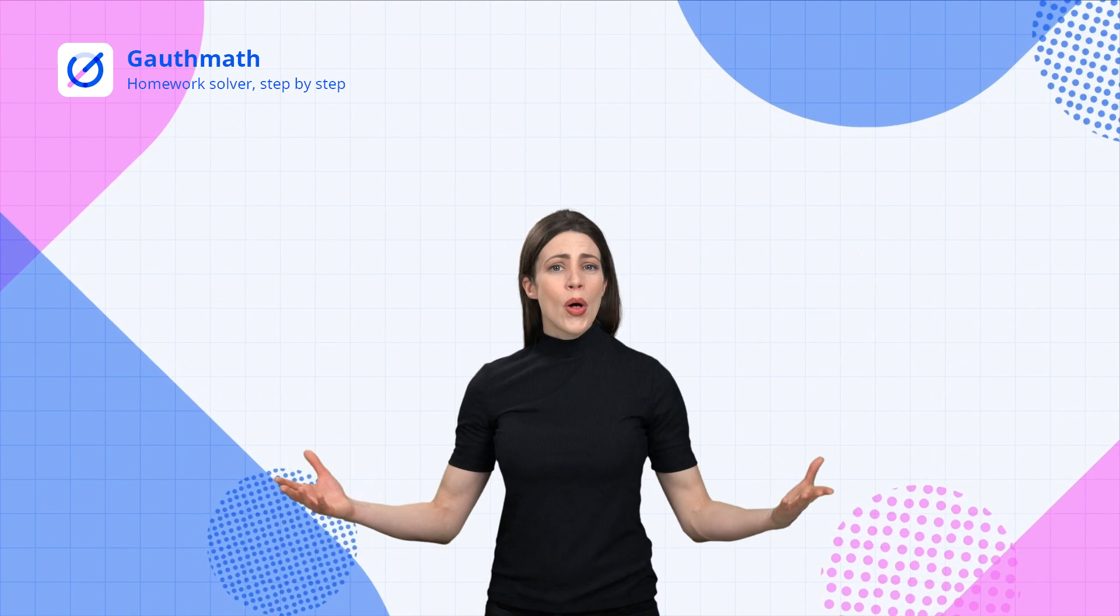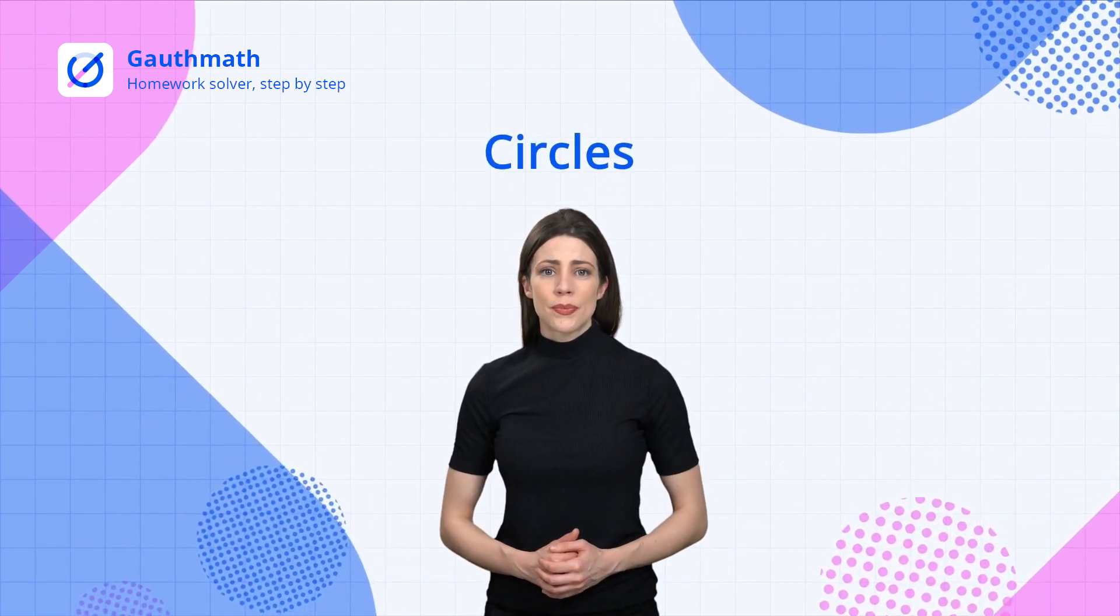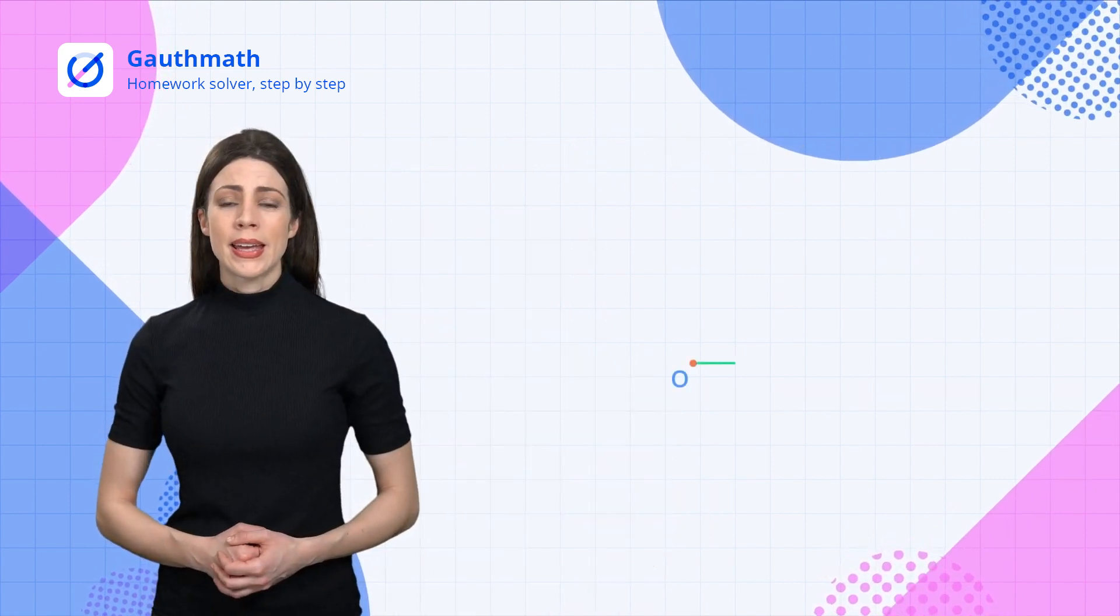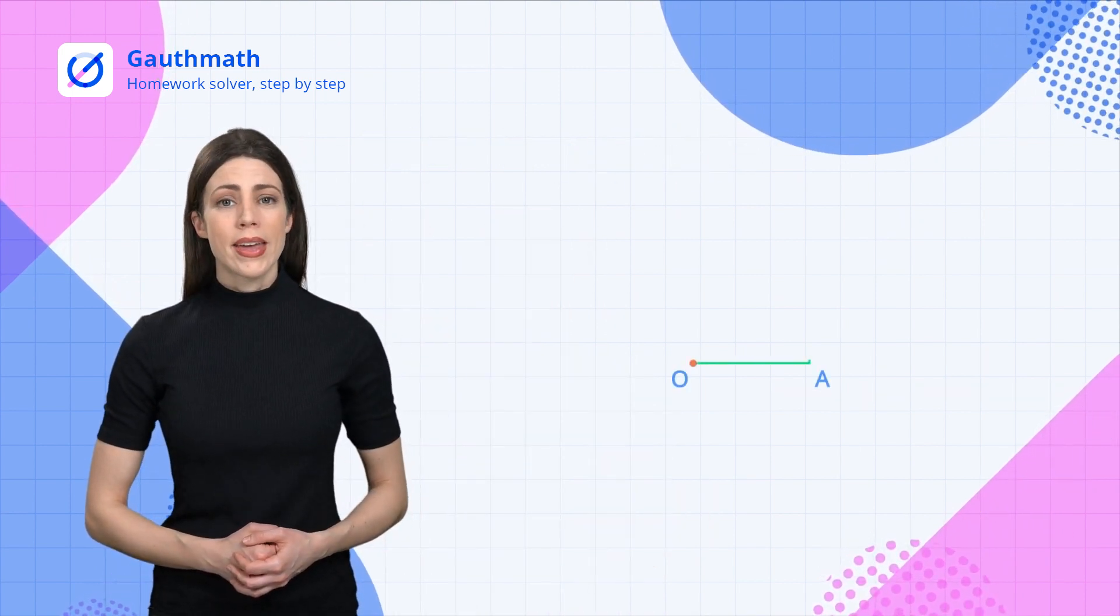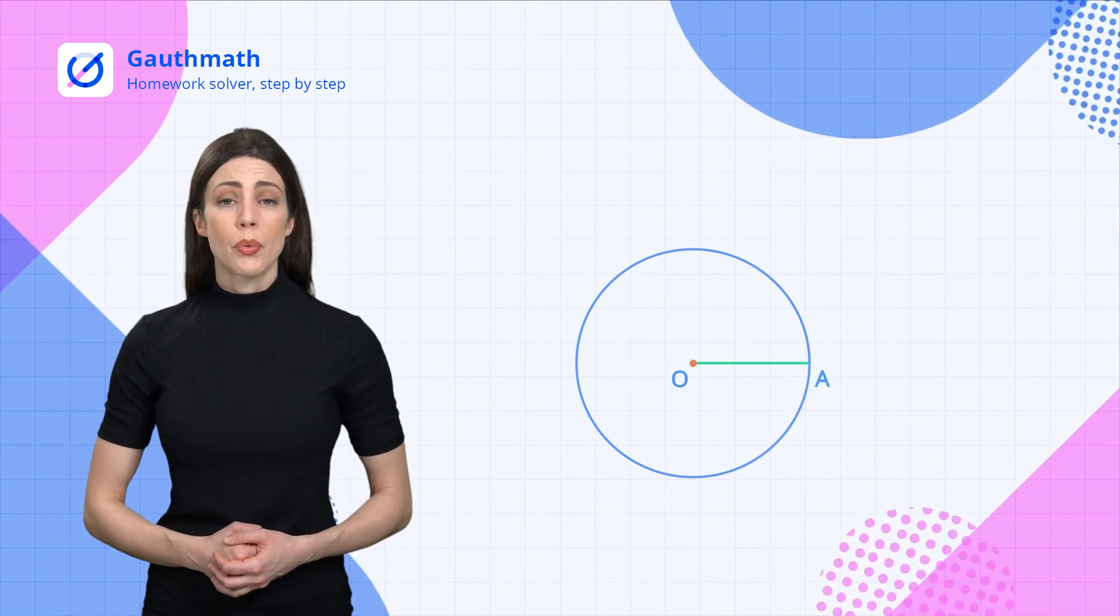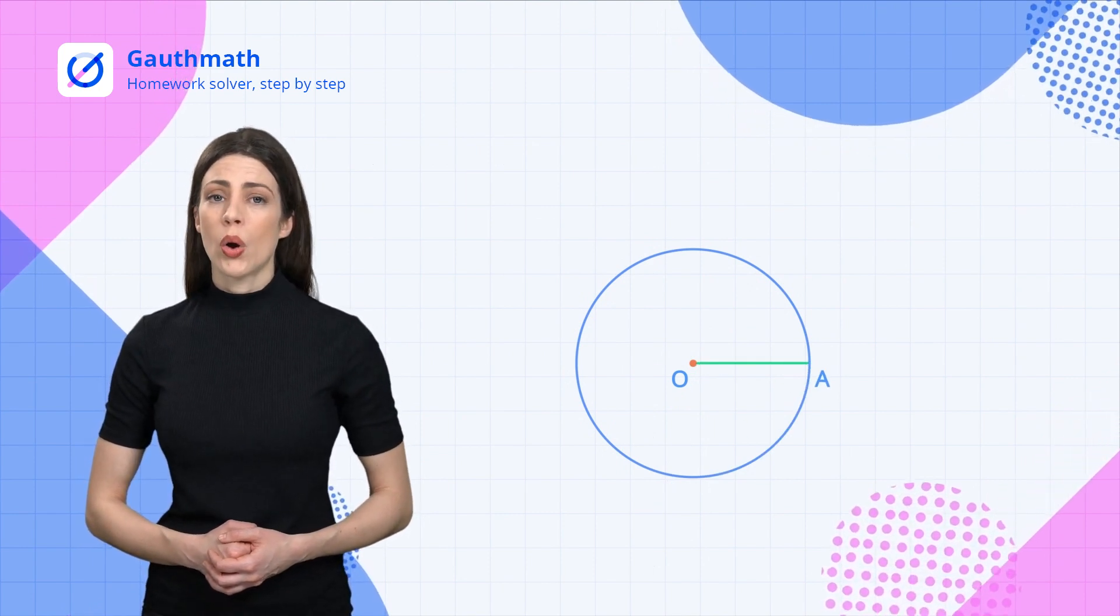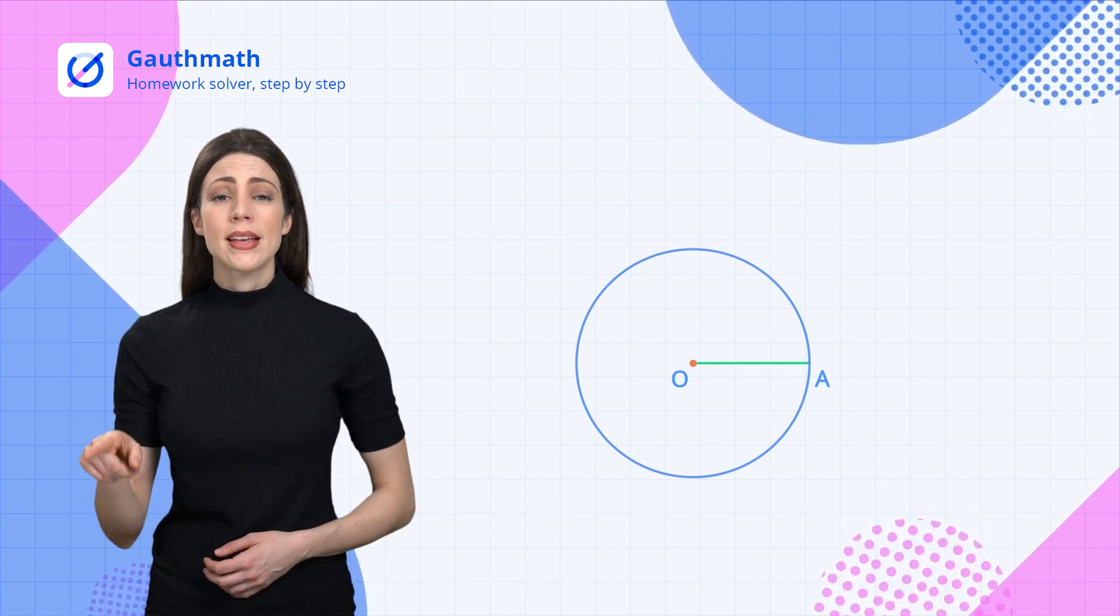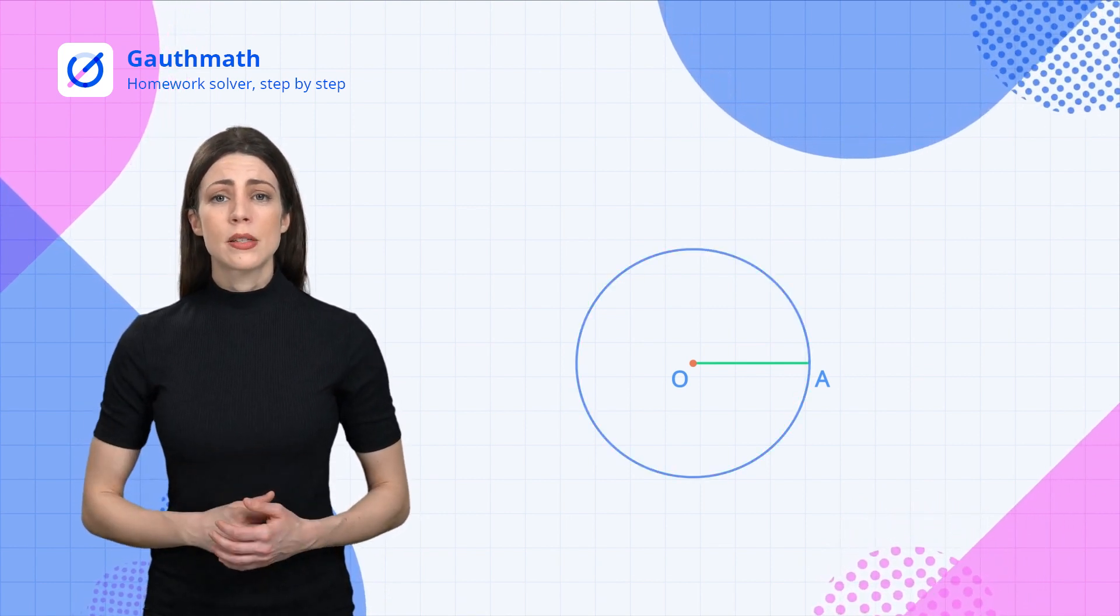What are circles? In a plane, line segment OA completes a full rotation around its fixed endpoint O. The shape formed by the track of endpoint A is a circle. The fixed point O is called the center.